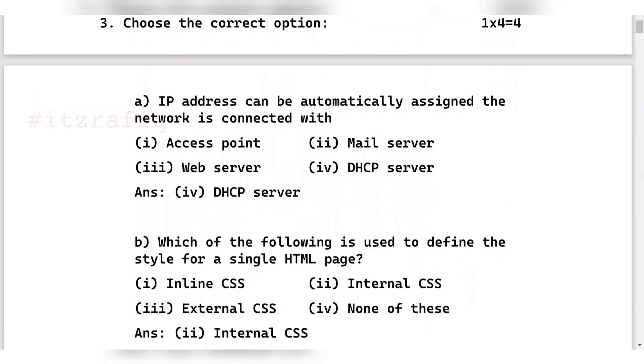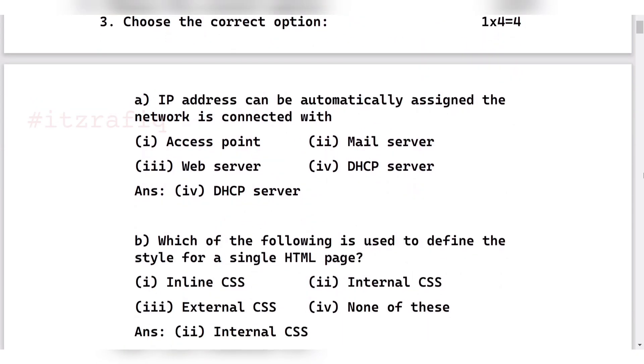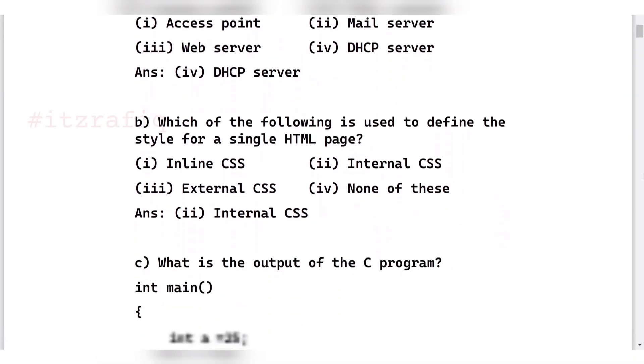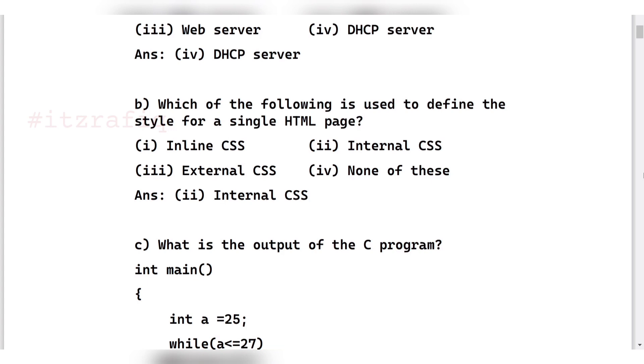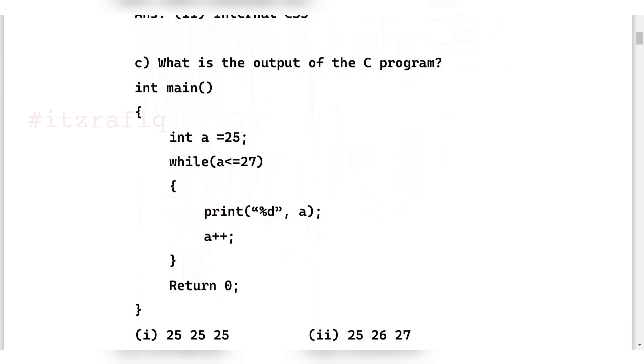Then choose the correct option. First one: IP address can be automatically assigned in a network. This will be DHCP server. DHCP full form is Dynamic Host Control Protocol. Then which of the following is used to define style for a single page - this is inline CSS. Also, internal CSS, and inline is used to define style for just a single tag, and external for multiple pages.